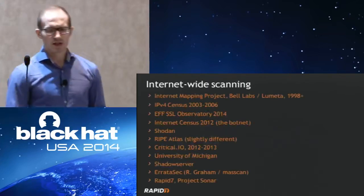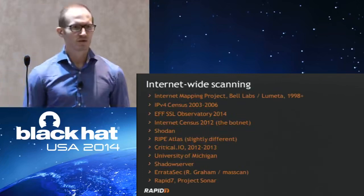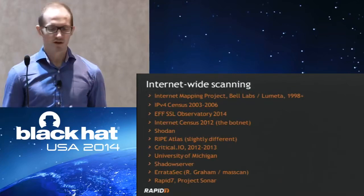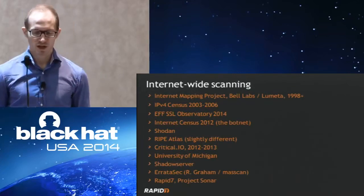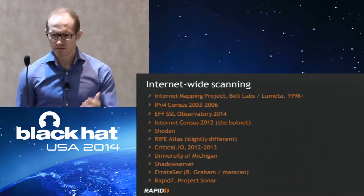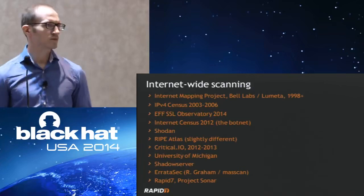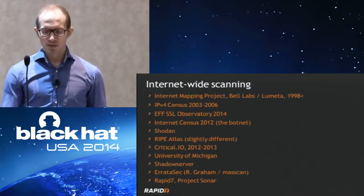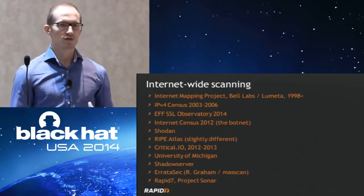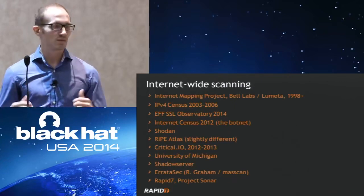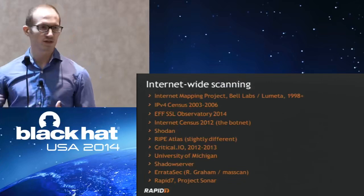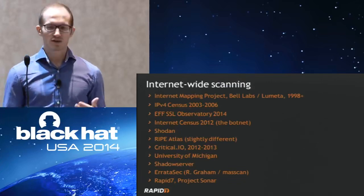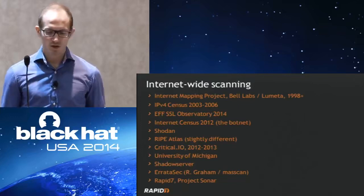The history of this is quite long. The first internet scanning project with the goal of reaching every IP address started around 1998, maybe 2000. With the internet mapping project and also the IPv4 census, they wanted to see how the allocation of IP addresses was progressing, and see how much of the net blocks are in use and how many systems are online.